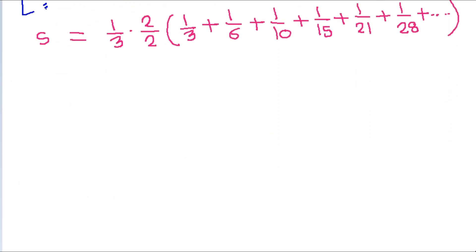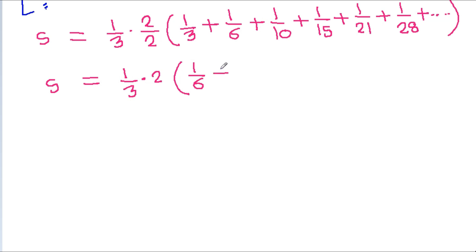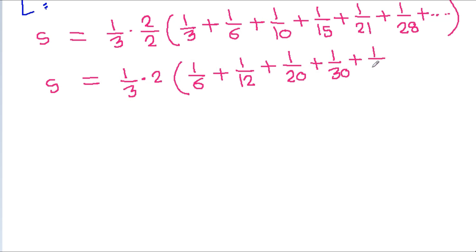Then S will be equal to 1 by 3 times 2, times the sum of 1 by 6 plus 1 by 12 plus 1 by 20 plus 1 by 30 plus 1 by 42 plus 1 by 56 plus and so on.